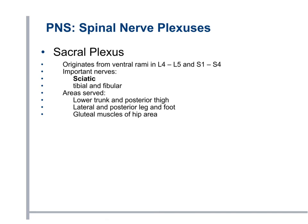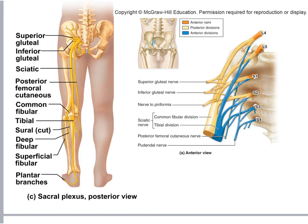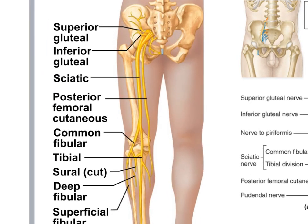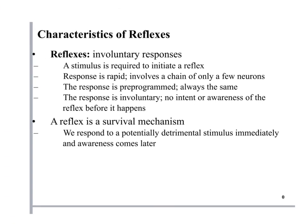The sacral plexus contains the sciatic nerve — the largest nerve in the body. It innervates the lower trunk, posterior thigh, lateral and posterior leg and foot, and the gluteal muscles. All posterior portions of the leg are served by the sciatic nerve. The plexuses arise from the spinal nerves running together and give rise to the distinct nerves we've discussed.